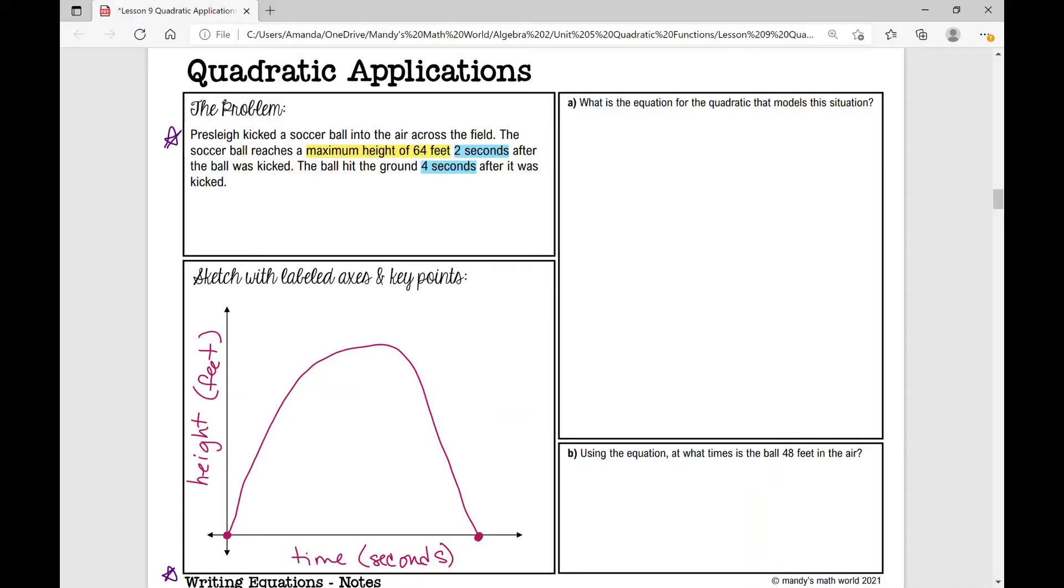What else do we know? We know that the soccer ball reaches a maximum height of 64 feet two seconds after it was kicked. So that vertex right there is going to be two seconds after it's kicked, the ball reaches a maximum height of 64 feet.